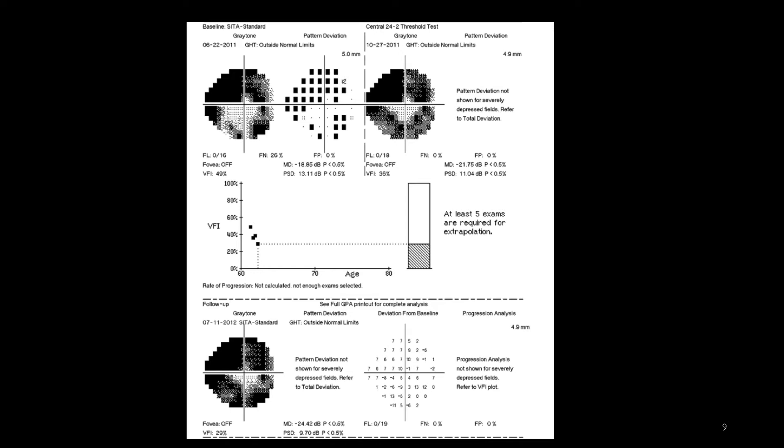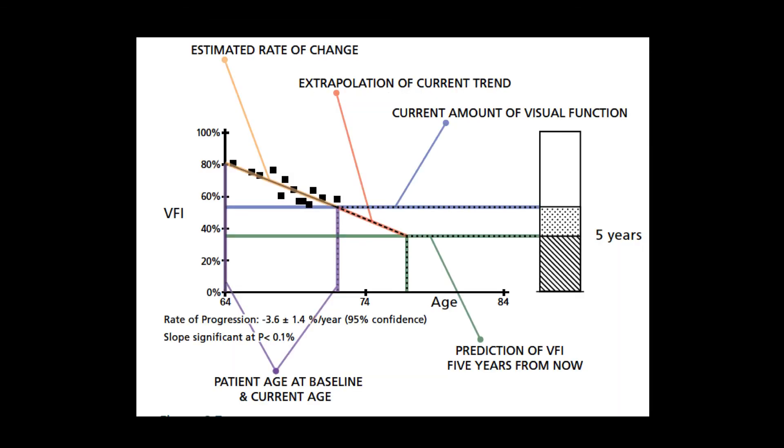This represents the VFI. Each black box around the line represents one of those visual fields that the patient had. The first one was taken at age 65, and the latest one has been at age 70.